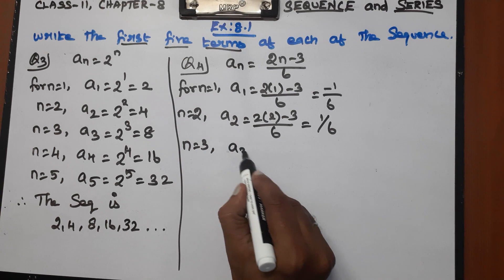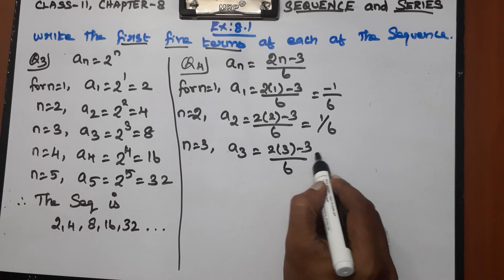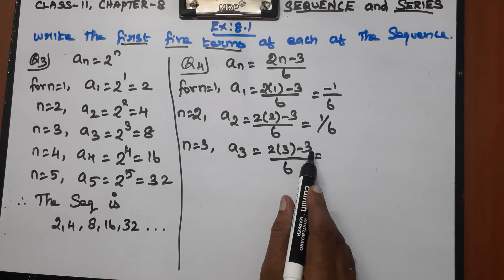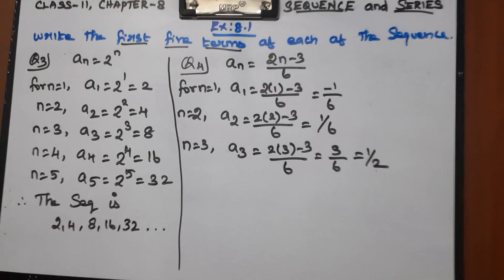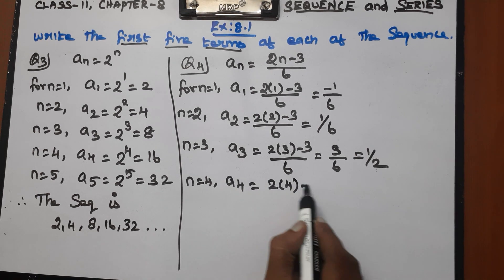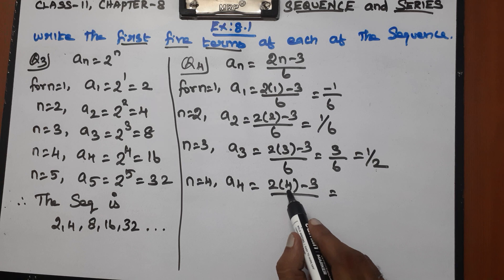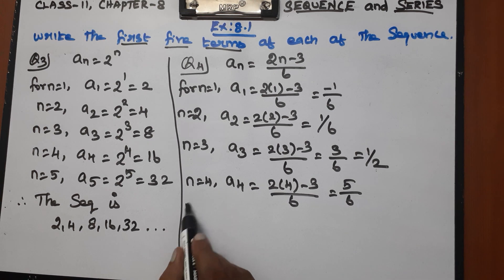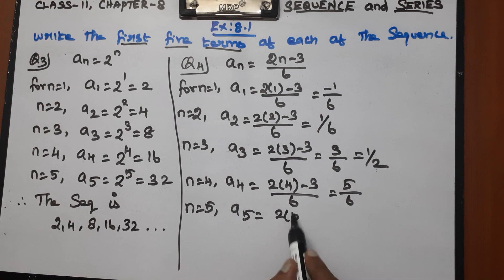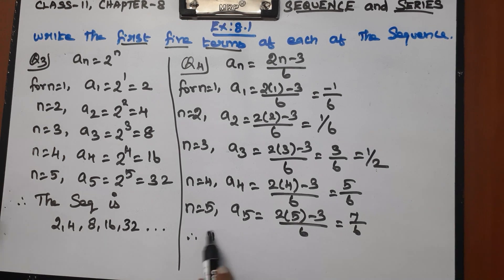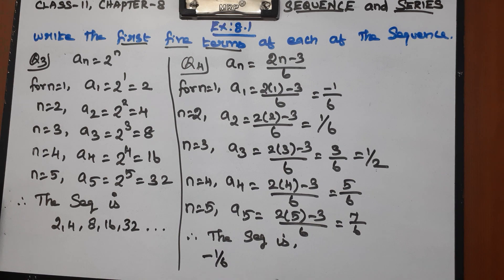Next, n equal to 3: a3 equals (2 into 3 minus 3) divided by 6. 2 into 3 is 6, 6 minus 3 is 3, so a3 equals 3 by 6, which simplifies to 1 by 2. Therefore the sequence of the given nth term is: minus 1 by 6, 1 by 6, 1 by 2, 5 by 6, 7 by 6.